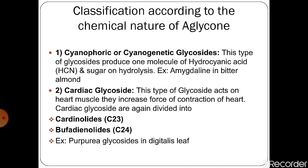The second class is cardiac glycosides. This type of glycoside acts on heart muscles and increases the force of contraction of the heart. Cardiac glycosides are again divided into two categories based on the number of carbons: first, cardenolides, which contain C23; and bufadienolides, which contain C24. An example of cardiac glycosides is purpureoglycosides, which are present in Digitalis species.